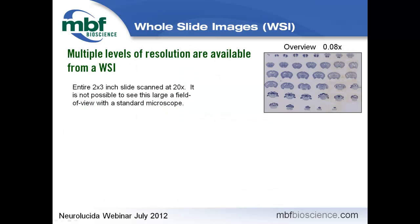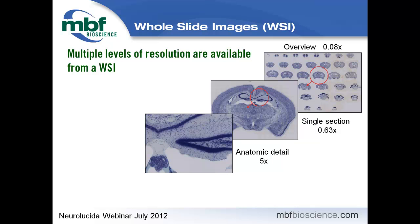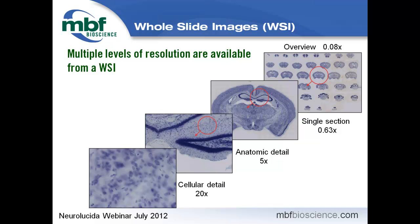We also have a product line that handles whole slide imaging, what we call virtual slides — our virtual tissue line. You take an entire slide and digitize it at high magnification: 40, 60, or 100x. That slide is made up of thousands of different image planes, all stitched and merged together into a single image at multiple resolutions. You can zoom from the whole slide image down to anatomical detail at 5x and then to the cellular level at 20x, performing analysis or reconstructions from a single whole slide image.